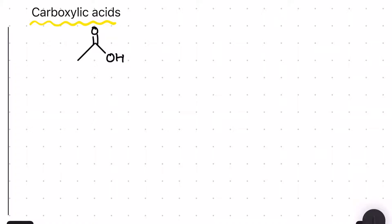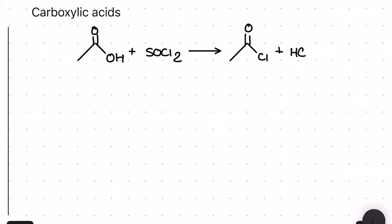Moving on into the carboxylic acids: here we're taking the carboxylic acid and reacting it with thionyl chloride, SOCl₂, to produce an acyl chloride, some hydrochloric acid, and some SO₂.